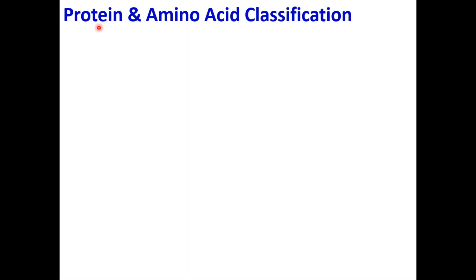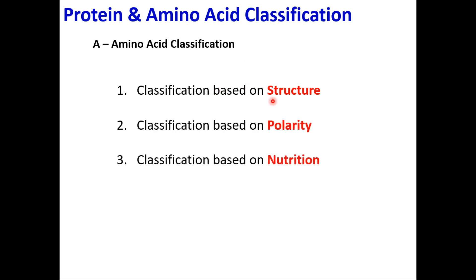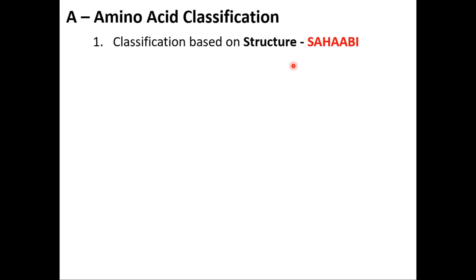Amino acids can be classified based on different parameters. The protein-forming amino acids are classified based on their structure, their polarity, their nutritional value, and their metabolic fate. We will go through each classification system one by one and try to memorize which amino acids fall under each category. Starting from classification based on structure, a mnemonic word to remember is 'SAHABI'.